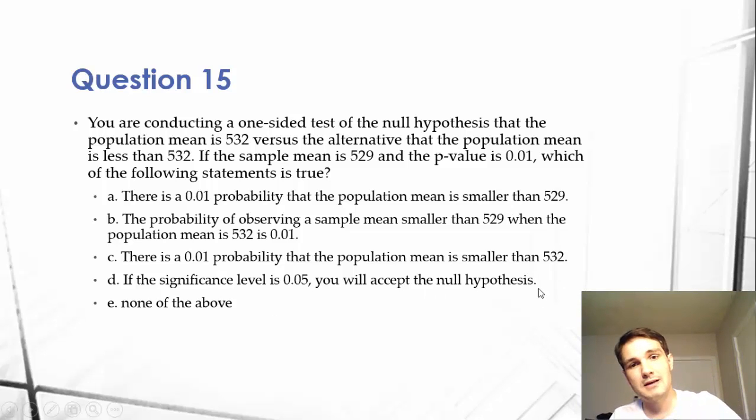We would reject the null hypothesis because the significance level was 5%. Then we would reject it because the p-value is 1%. So since the significance is greater than the p-value, we reject the null hypothesis. So D is not correct.